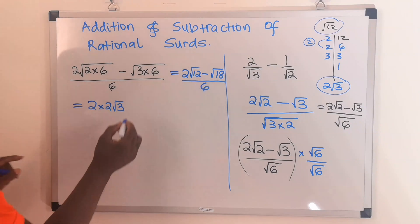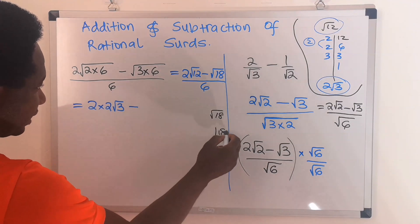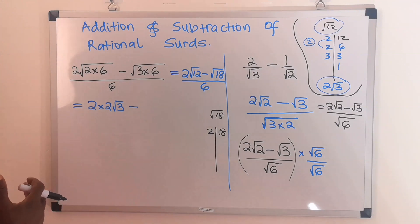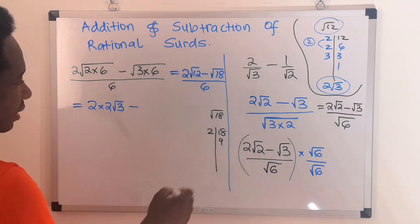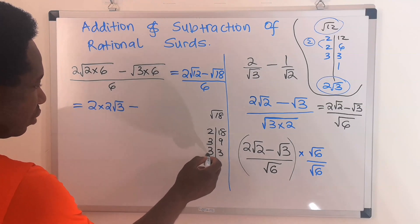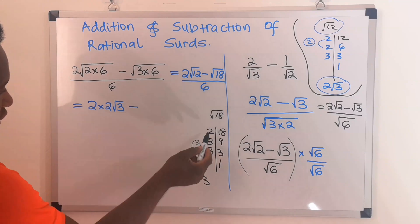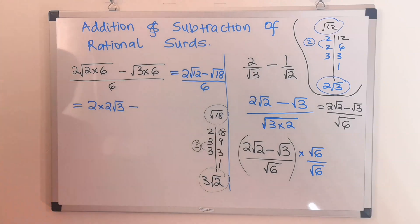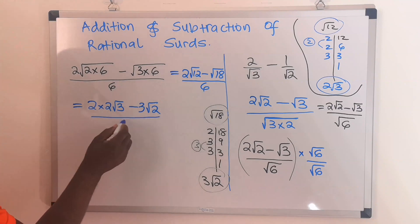Next, for the square root of 18: starting with 2, 2 into 18 gives 9. 2 into 9 leaves a remainder, so we go with 3. 3 into 9 is 3; 3 into 3 is 1. Since 3 appears twice it is free, so this 3 comes outside. 2 has no pair, so we keep it inside the square root. Hence, the square root of 18 is 3 root 2. At the denominator, we have 6.